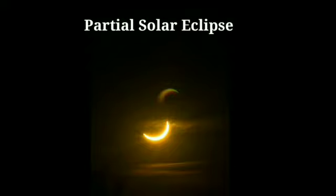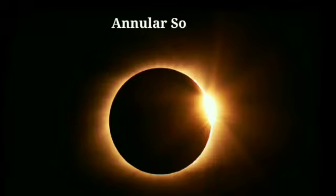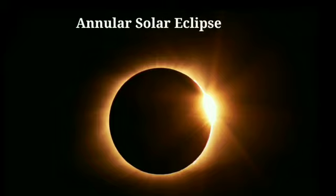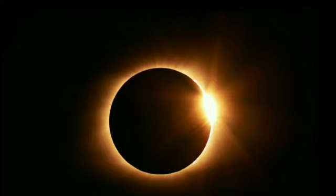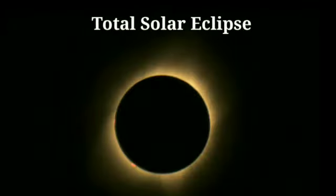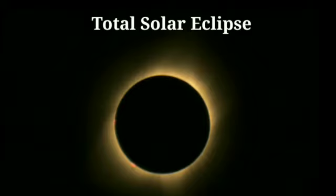Partial solar eclipse: it occurs when the moon only partially obscures the sun's disc and casts only its penumbra on earth. An annular solar eclipse occurs as the new moon moves in front of the sun but does not cover the sun's disc completely, and the sun's outer edges remain visible to form a ring of fire in the sky. A total solar eclipse occurs when a new moon passes between the sun and the earth and totally blocks out the sun.